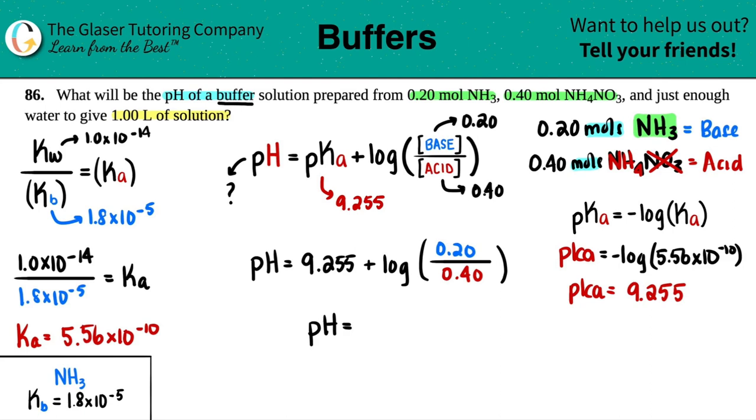And now we need the correct sig figs. pH is a little different because the lowest number of sig figs is actually how many you need after the decimal. So I need two sig figs after the decimal, so it would be 8.95. Yep, 8.95. And that, my friends, is the pH. It's basic, it's above 7, so the pH of this buffer would be a little basic. It's above 7, so it's basic. But nonetheless, it's 8.95.